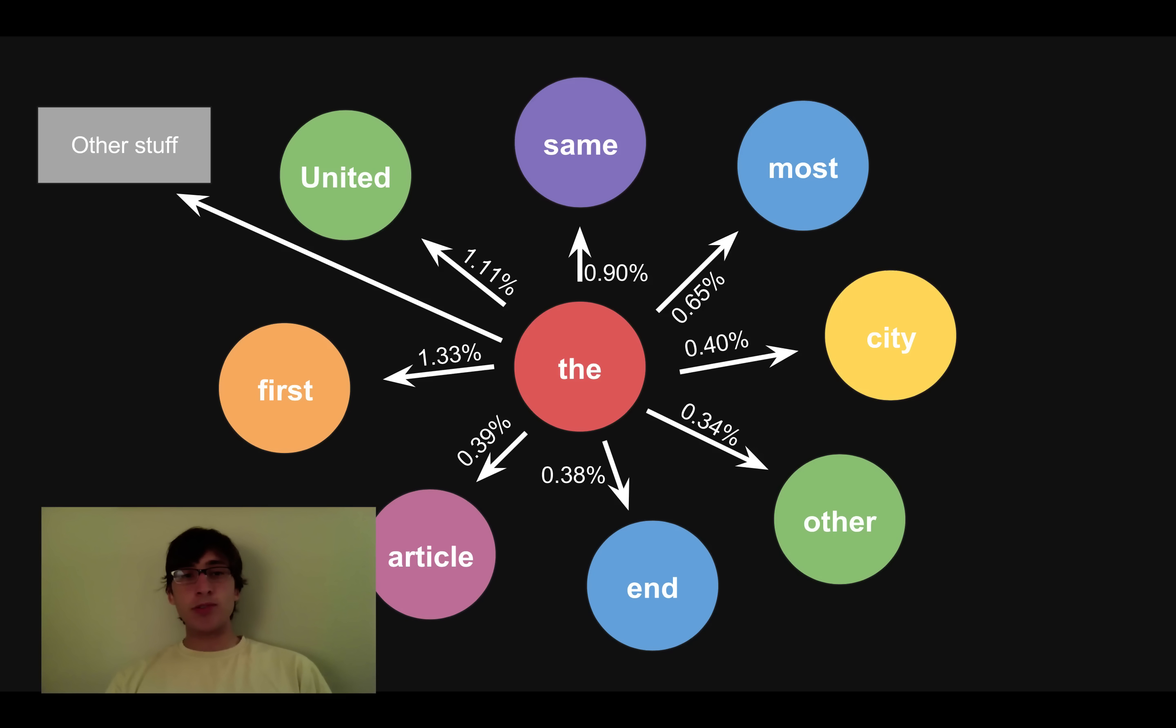And what this shows is if I'm just reading text and all I know, all I'm told is the last word I saw was the word the, I can predict first, same, most, city are all pretty likely words to happen. And I know what's likely to come next. So the Markov chain is a model basically of the probabilities of certain words following other words when we use it in terms of text.